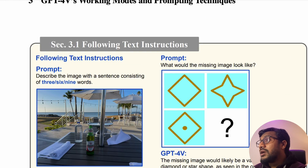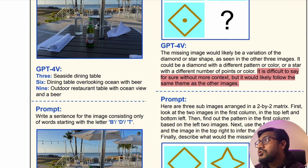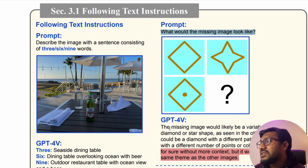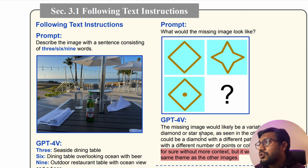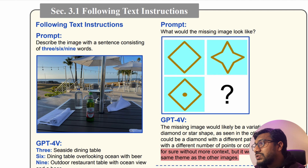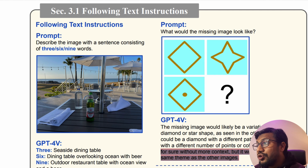On the other hand, if you want to see what the missing image would look like — you have a diamond here and a star here with a dot — it says the missing image would likely be a variation of the diamond or star shape, as seen in the other three images. It could be a diamond with a different pattern or color. It is difficult to say for sure without more context. So you did not get the answer.